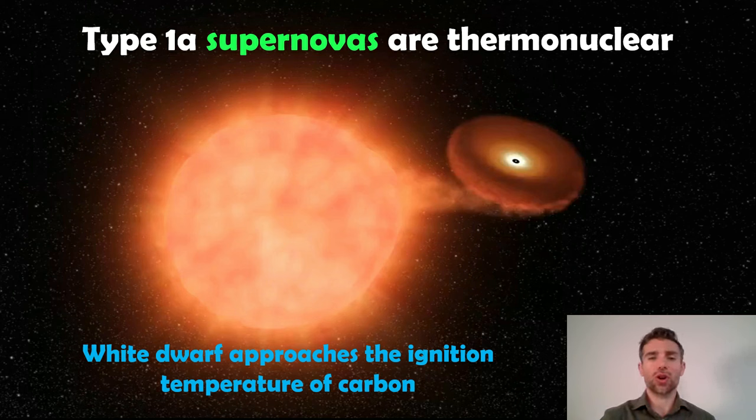As that white dwarf star gets more massive, it increases in temperature. As it increases in temperature, it approaches the ignition temperature of carbon, which white dwarf stars are predominantly made of. Once it reaches that ignition temperature of carbon, the whole star will go supernova, and that's your type 1a. Because it happens at the same mass, it's always the same energy.